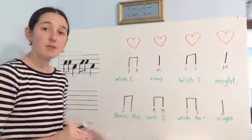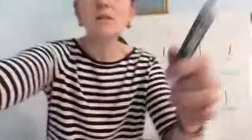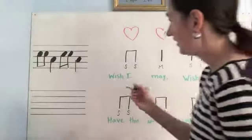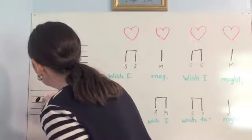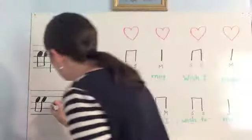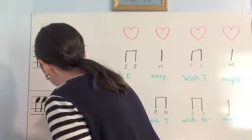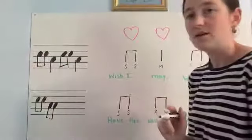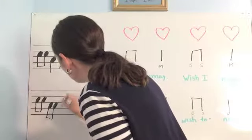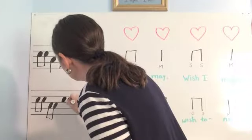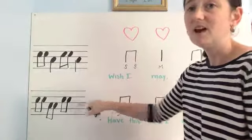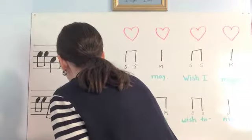If you want to do that along with on your paper, that would be wonderful. I'll see if we can make it so you can see the staff a little bit better. So we're going to start out with our so-so. Then we need a me-me — and that's also eighth notes or a tee-tee. And then we have "wish to," which we're going to be back up here in the so space. And then "night" is going to be on the me space and it's going to be a ta, or a quarter note. So we'll draw that in there.